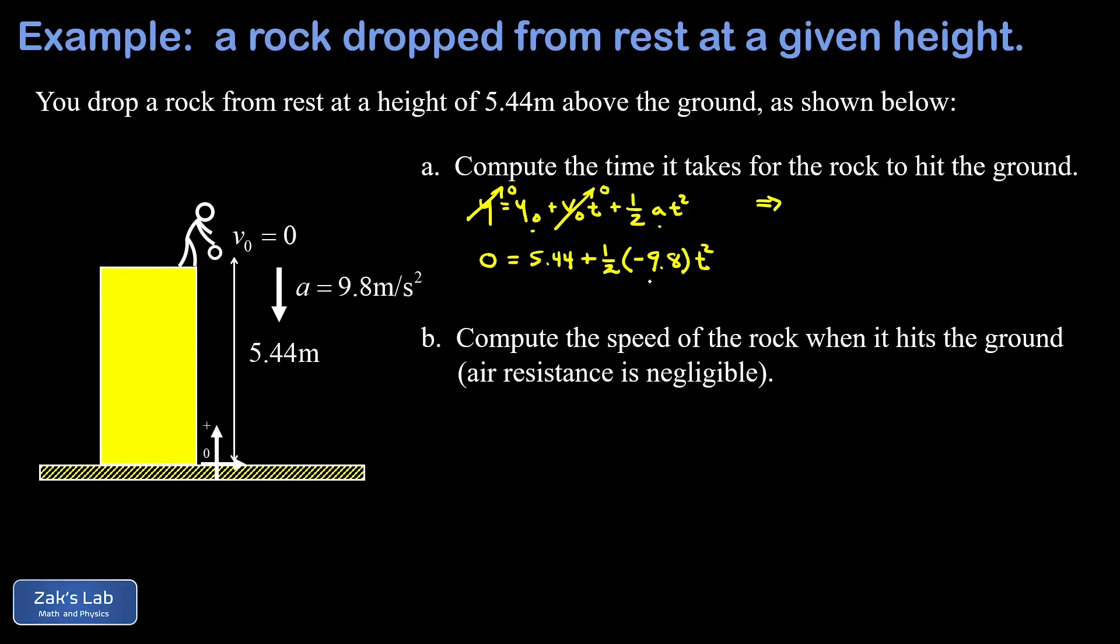Now half of 9.8 is 4.9. So we have a negative 4.9 t squared. We can go ahead and add that to both sides and write 4.9 t squared is equal to 5.44.